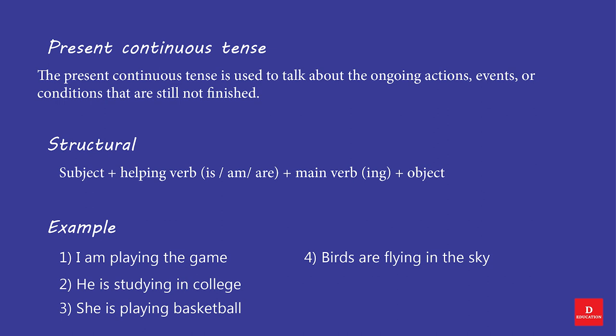Structure: Subject + Helping Verb (is/am/are) + Main Verb (-ing) + Object. Examples: I am playing the game. He is studying in college. She is playing basketball. Birds are flying in the sky.